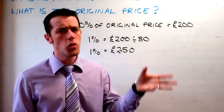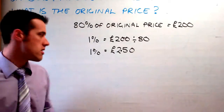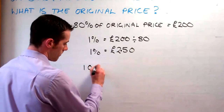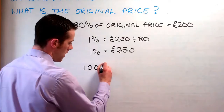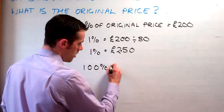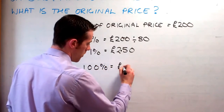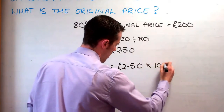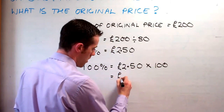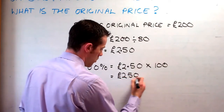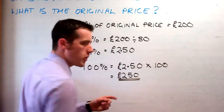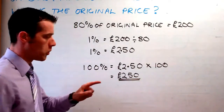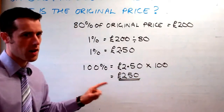So we've got 1%. How do we make that up to 100%? Nice and simple — all we do is multiply by 100. So 100% is equal to £2.50 times 100, and that gives us £250. The original price was £250, so we know that's correct.